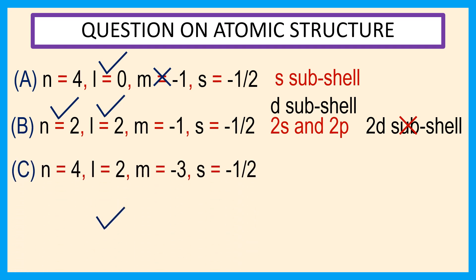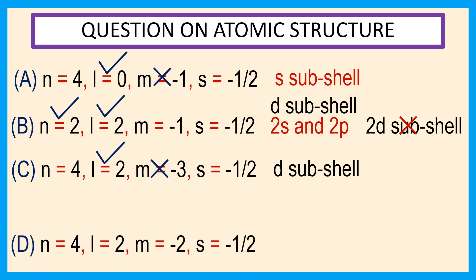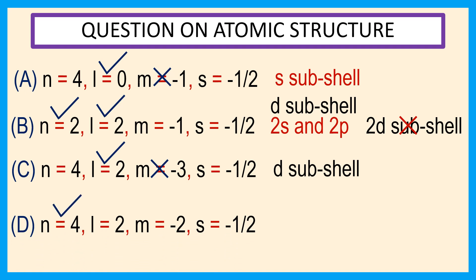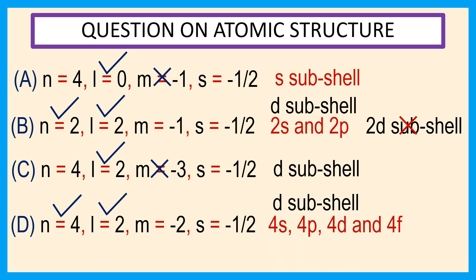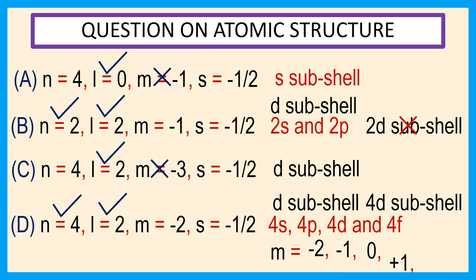See option c: here l is equal to 2, which indicates the d subshell. For n is equal to 4, the possible subshells are 4s, 4p, 4d, and 4f. Here l is equal to 2, which indicates the d subshell, therefore it is the 4d subshell. For the d subshell, possible values of m are minus 2, minus 1, 0, plus 1, and plus 2. In option d, m is equal to minus 2, which is possible, and s is equal to minus half, which is also possible. So the correct option is d.